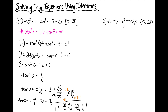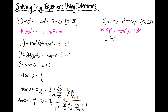For number 2, I know I'm going to need an identity because I have a sine squared x and a cosine x — two different trig functions. My goal is to get the equation entirely in terms of one trig function. I can't replace anything for cosine x, but when I see sine squared x I immediately think of the Pythagorean identity: sine squared x plus cosine squared x equals 1, which rearranges to sine squared x equals 1 minus cosine squared x.